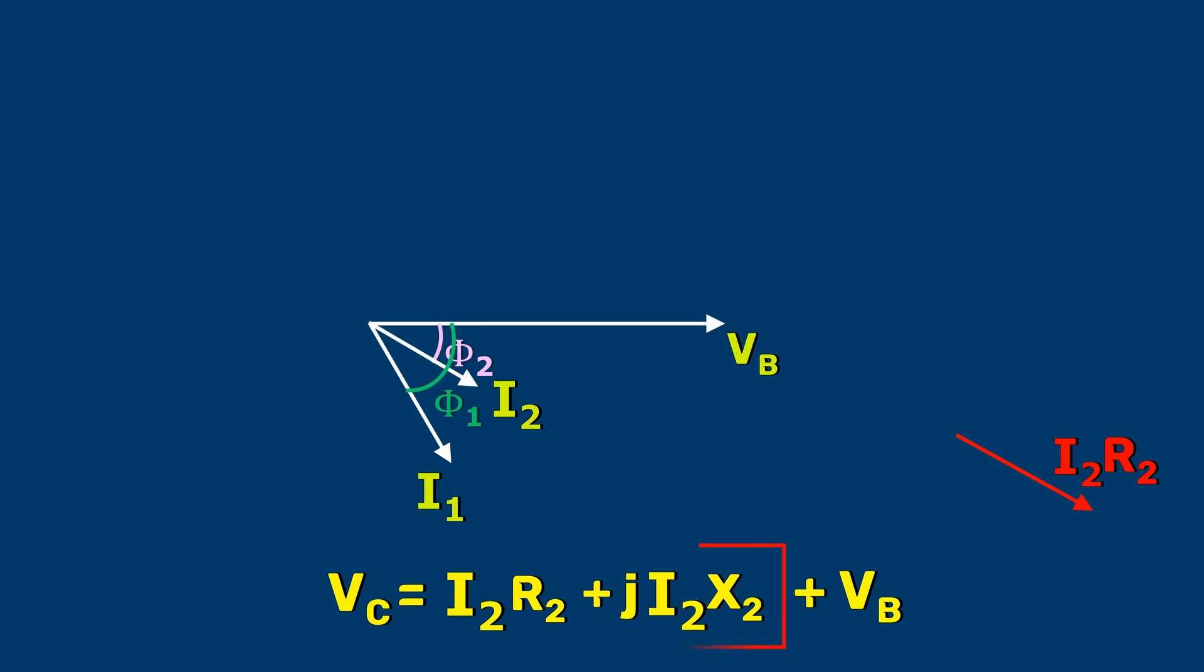Next is JI2X2. Similar to the previous one, we have I2 vector. When it is multiplied with a constant X2, its magnitude increases. Now, this is I2X2 but we need JI2X2. It has the same magnitude but different direction. JI2X2 will be perpendicular to I2X2. Now, we have got our JI2X2.